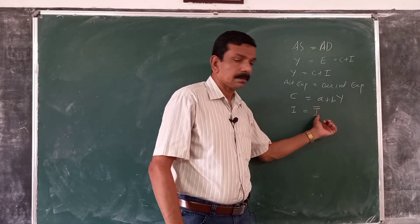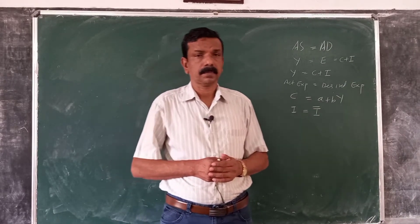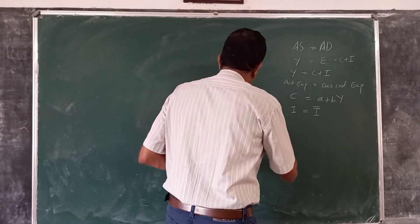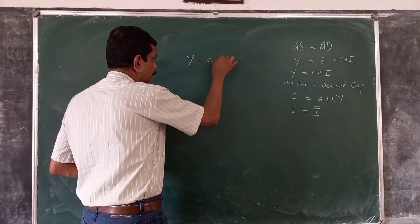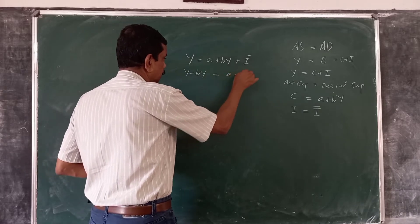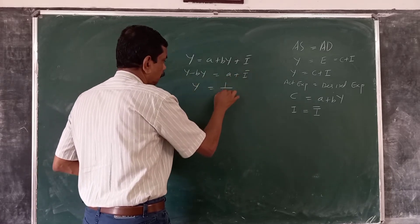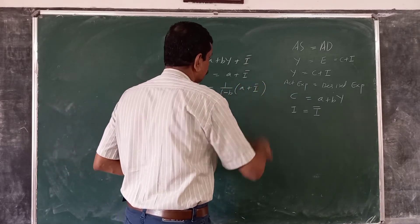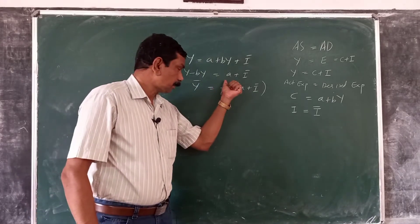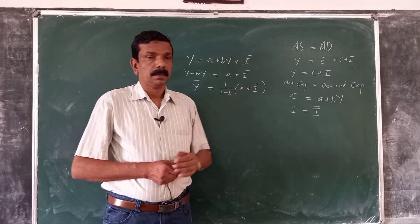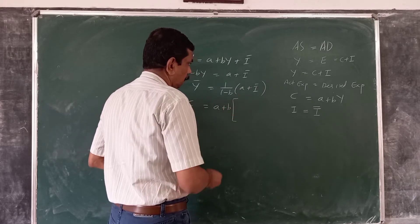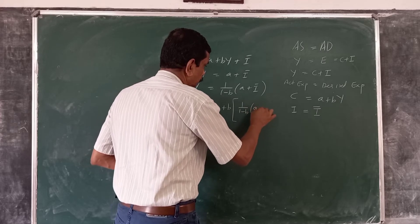These equations — Y equals C plus I, C equals A plus By, and I equals I bar — are known as structural equations because they depict the structure of relationship between variables in the economy. Substituting the values of C and I, we get Y equal to A plus By plus I bar, and the equilibrium level of income is equal to 1 over (1 minus B) into (A plus I bar). The equilibrium level of consumption can be obtained as A plus B into Y, which equals 1 over (1 minus B) into (A plus I bar).